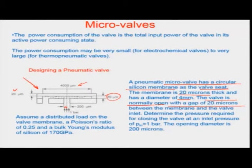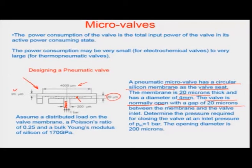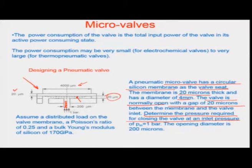The idea is that this membrane will bend down, as seen in the dotted region here, and will close the inlet so that the valve comes to the closed position. We have to determine the pressure required for closing the valve at an inlet pressure of 1 bar.